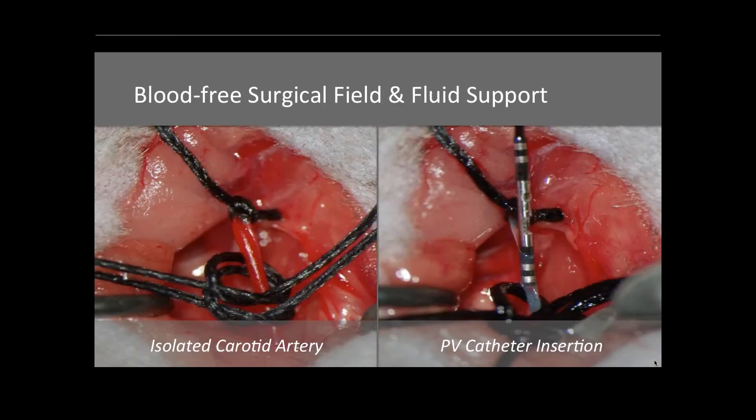A key problem with murine surgery is the murine blood volume of only around 1.9 to 2 milliliters — it doesn't take a large incision to cause severe problems in maintaining blood pressure. Most procedures for PV loops access high-pressure chambers such as the left ventricle or, as shown here, a carotid artery. Part of the surgical skill in these procedures is guaranteeing a bloodless field — easier said than done, especially when cannulating a carotid artery at approximately 120 mmHg pressure.